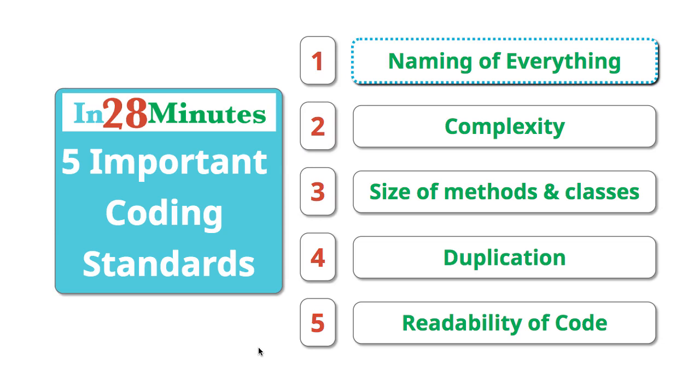The first one is how you name your variables, methods, and classes. That's the most important part of programming. Try and give bad names to your variables, methods, and classes and you would see that it becomes very difficult to understand them.